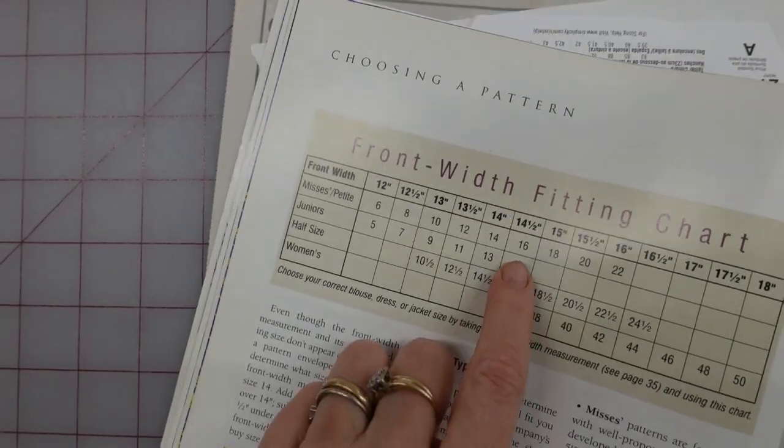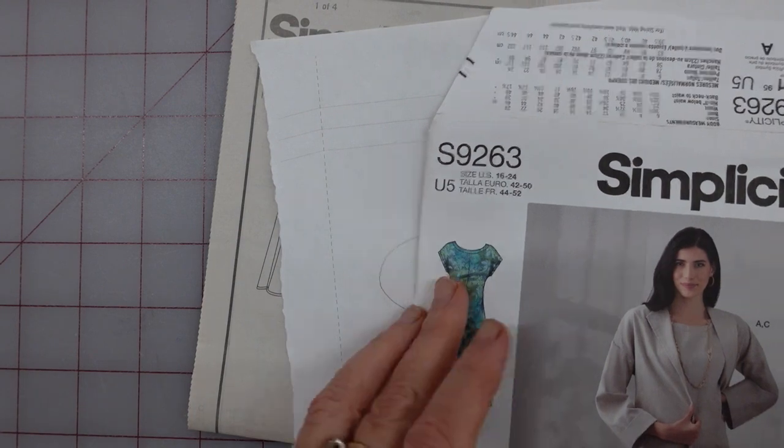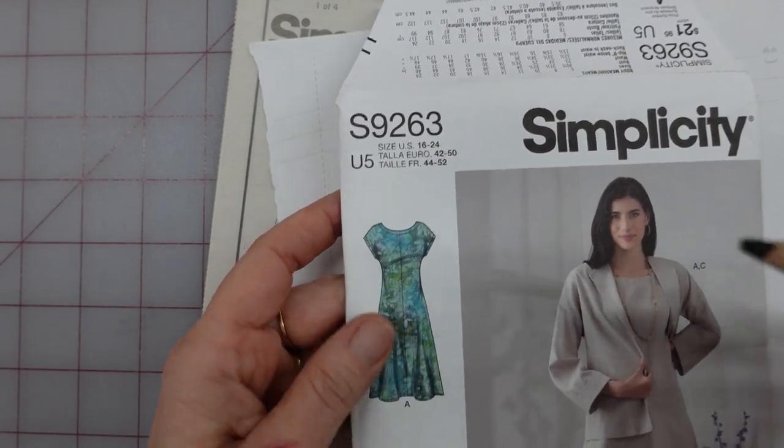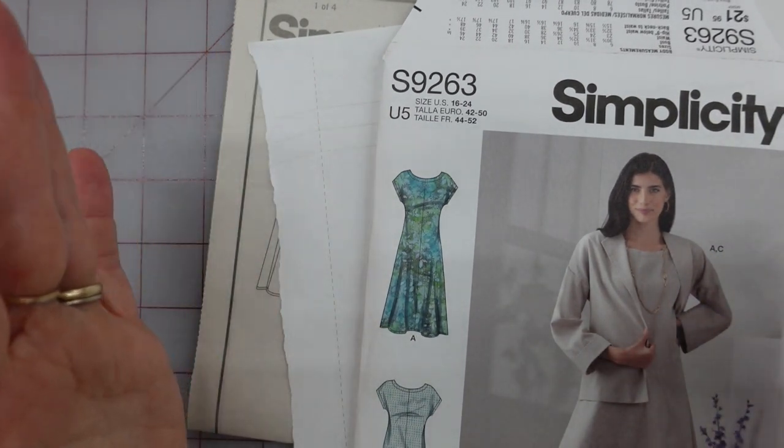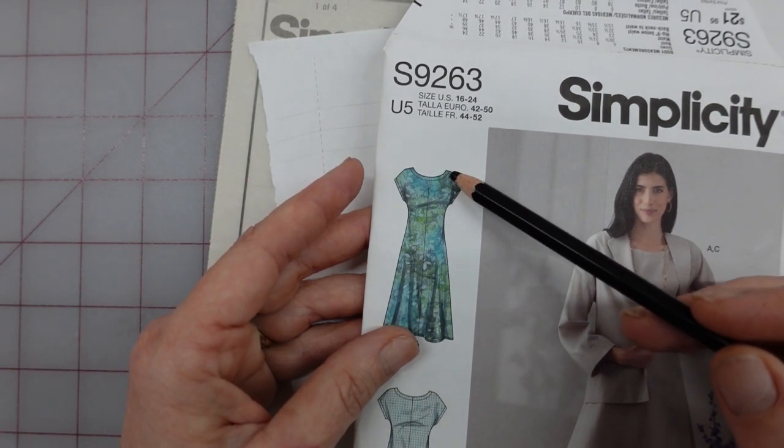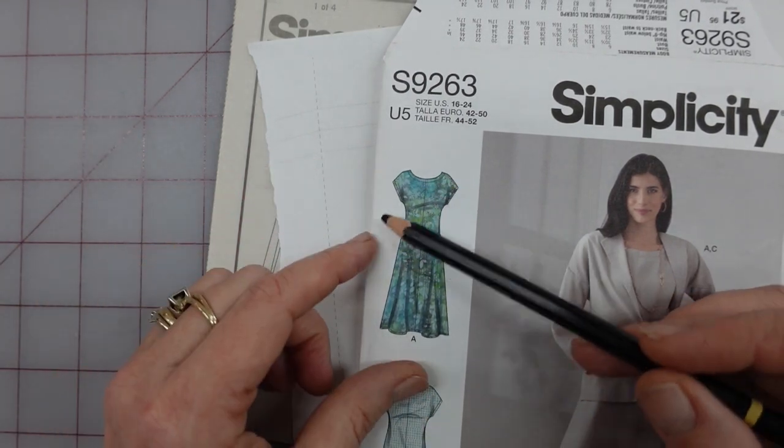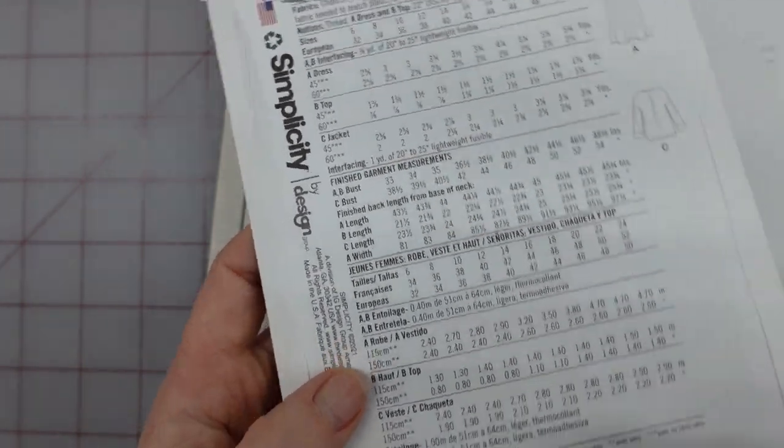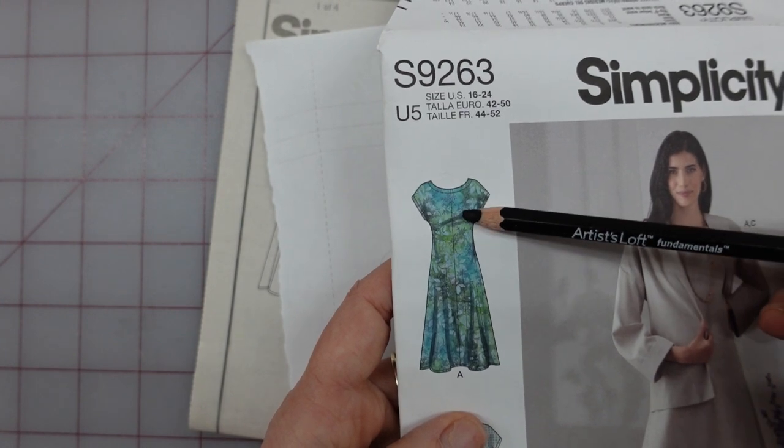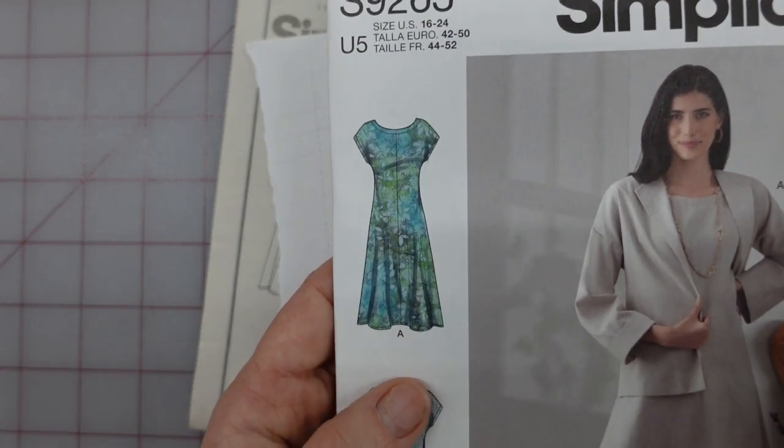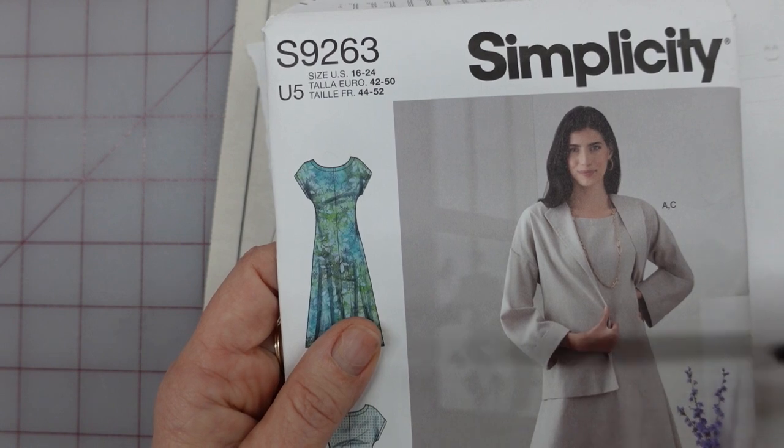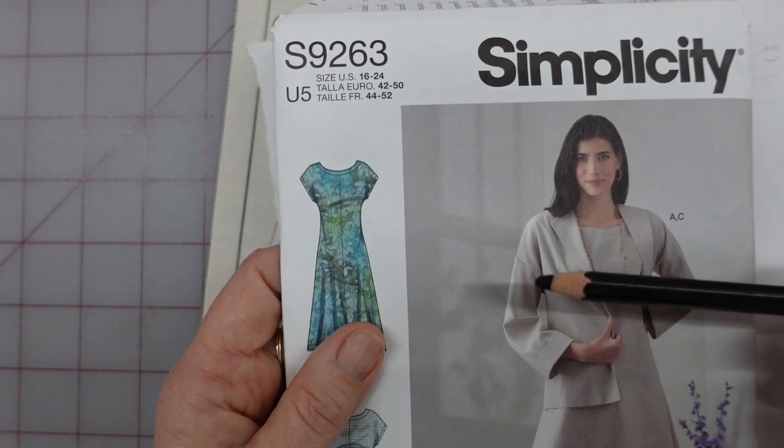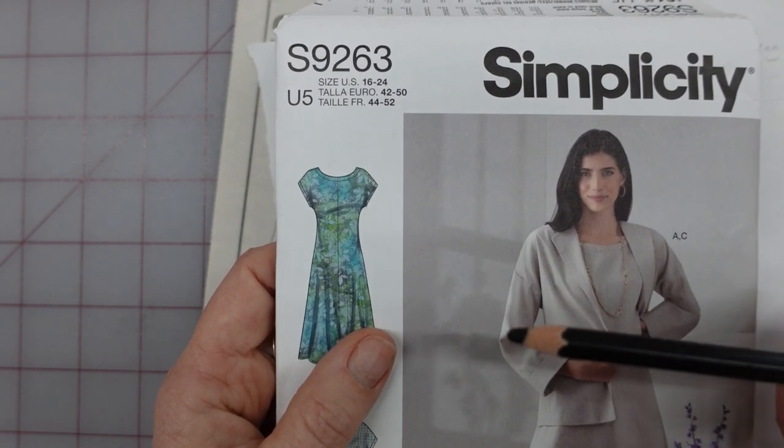But if you say, I am a smaller frame and based on that front measurement right here, you're getting a pattern for a smaller frame, you may need to do a full bust adjustment or a larger bust adjustment or something. It depends on your own body and everything to make this fit. So when I'm selecting a pattern like, say, this pattern right here, I know that according to the chart, I should be using a size 16. I also know that my bust is larger than a B cup. So if it's a pattern that looks like there's a lot of fitting done around the bust, I make adjustments at that point.